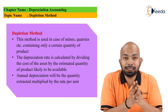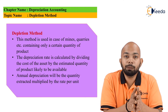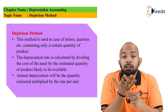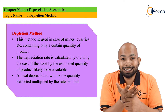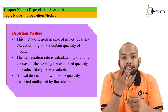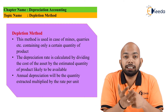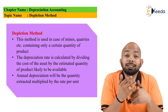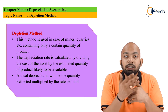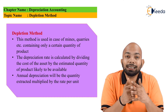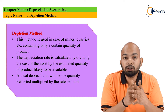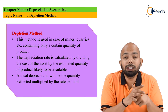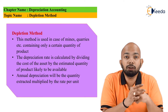The key difference is that this method is used for items which are scarce in resource and will keep depleting the moment consumption starts. It will keep on reducing, and since no resource can reproduce it over and over again, that is why we call it the depletion method.